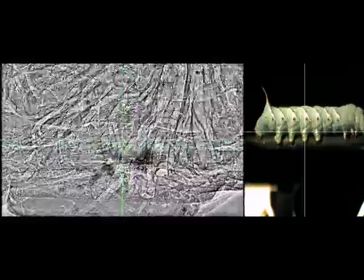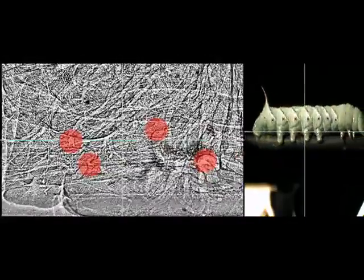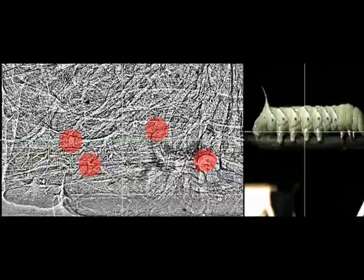In the X-ray videos, we clearly see the animal's trachea, or air tubes, which exchange gas through spiracles, the eye-like holes visible on the surface of the caterpillar. Many of these trachea are connected to the body wall and muscles. We have highlighted some of these trachea in red.